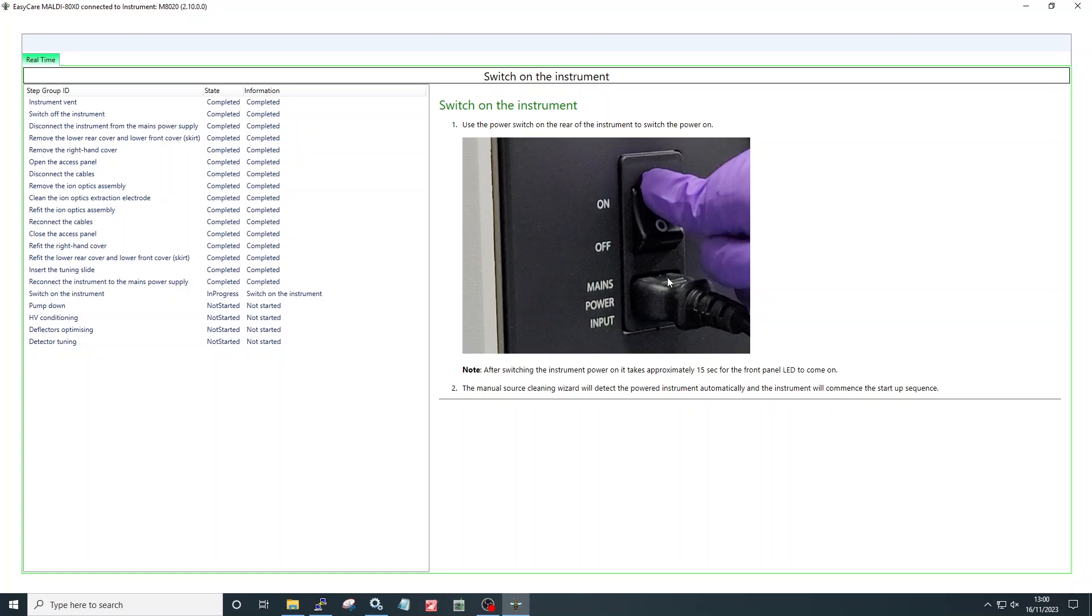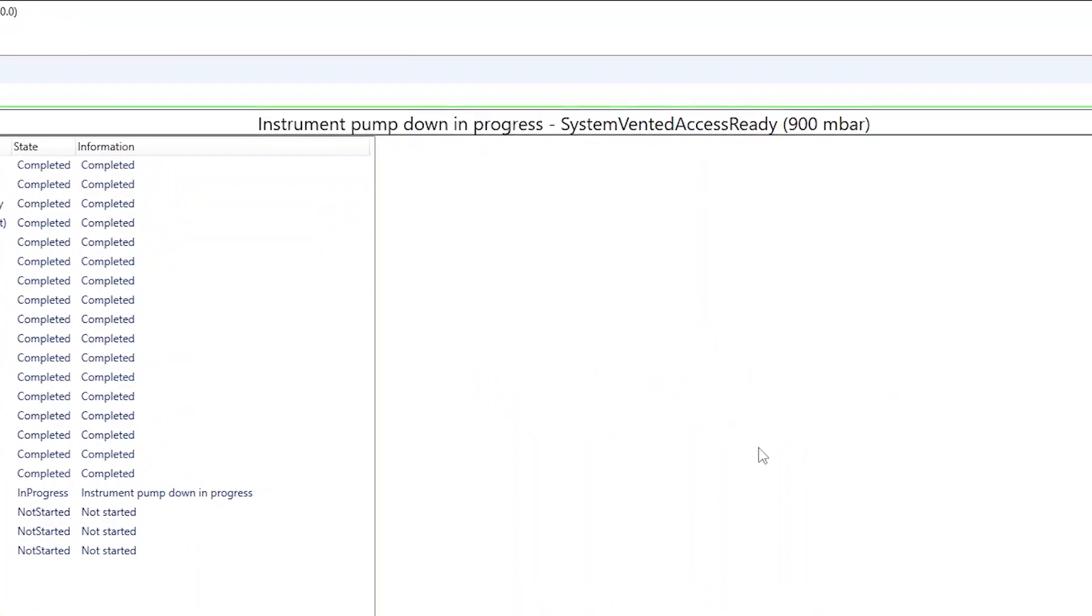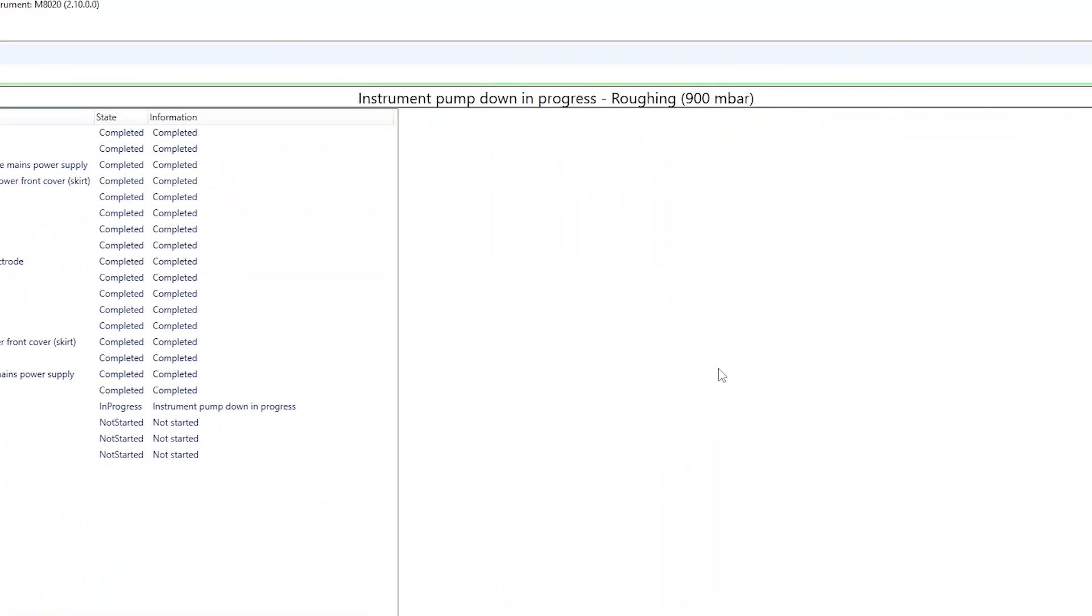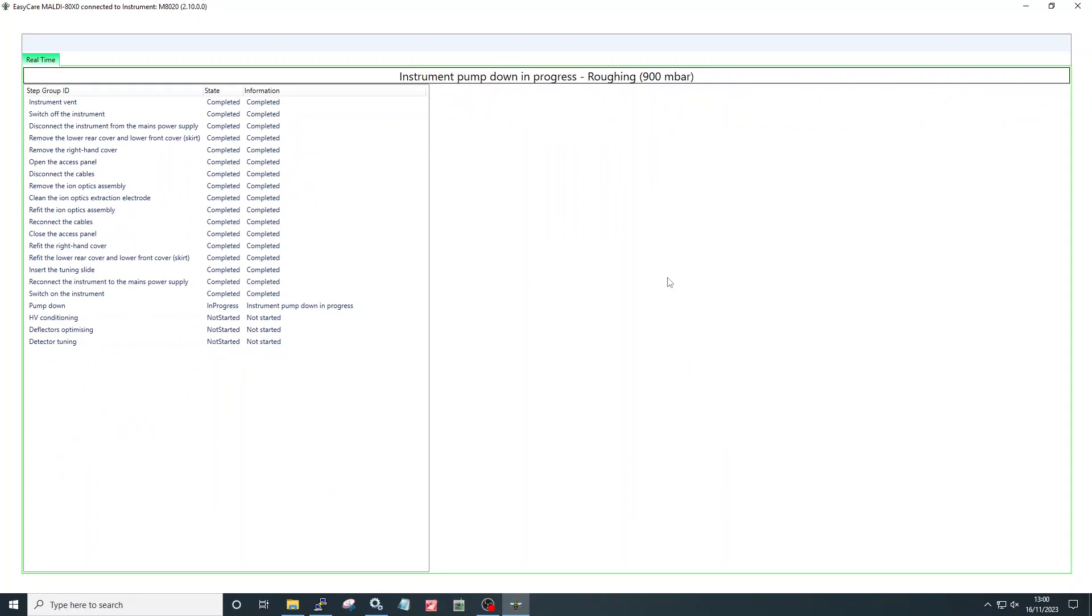After two or three minutes, the wizard will display the prompt: Instrument pump down in progress. The wizard will also display the stage of pumping along with the pressure reading of the analyzer vacuum. The pump down process will take approximately 45 minutes.